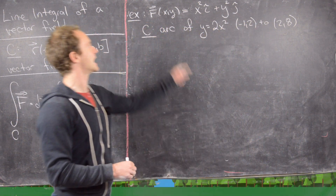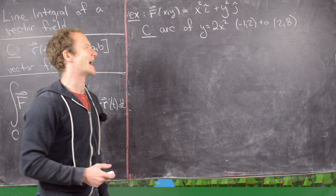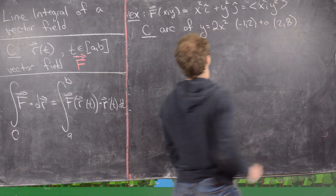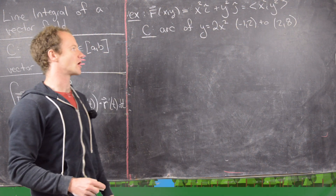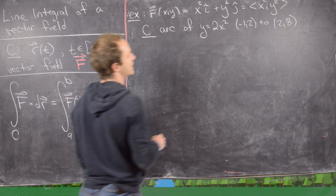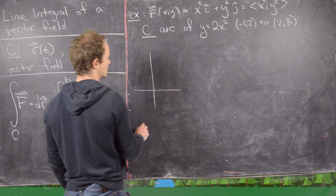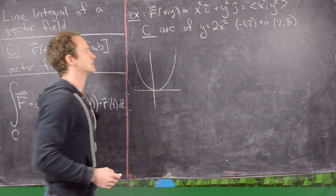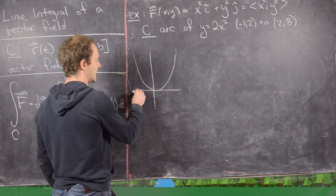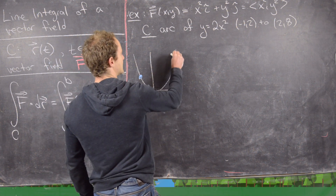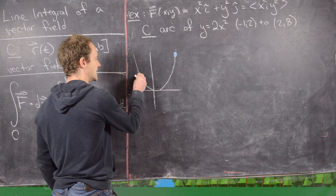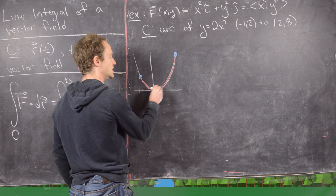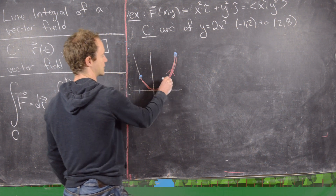The first example: let the vector field be F = x² i + y² j, so F = <x², y²>. The curve is the arc of the parabola y = 2x² from negative 1 comma 2 to 2 comma 8. So we have this parabola going from the point (-1, 2) up to (2, 8), and notice we're moving in that specific direction, which is really important.